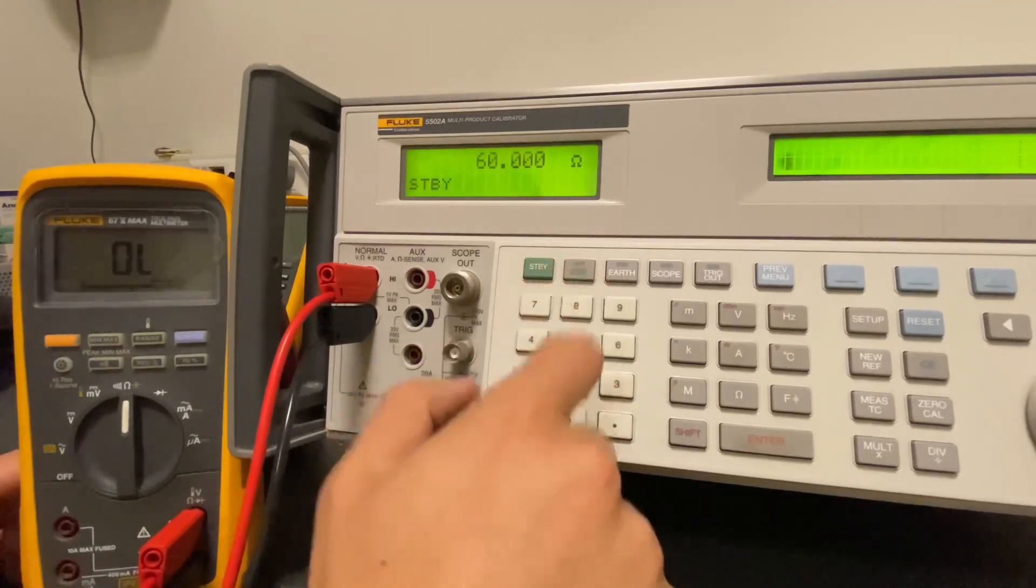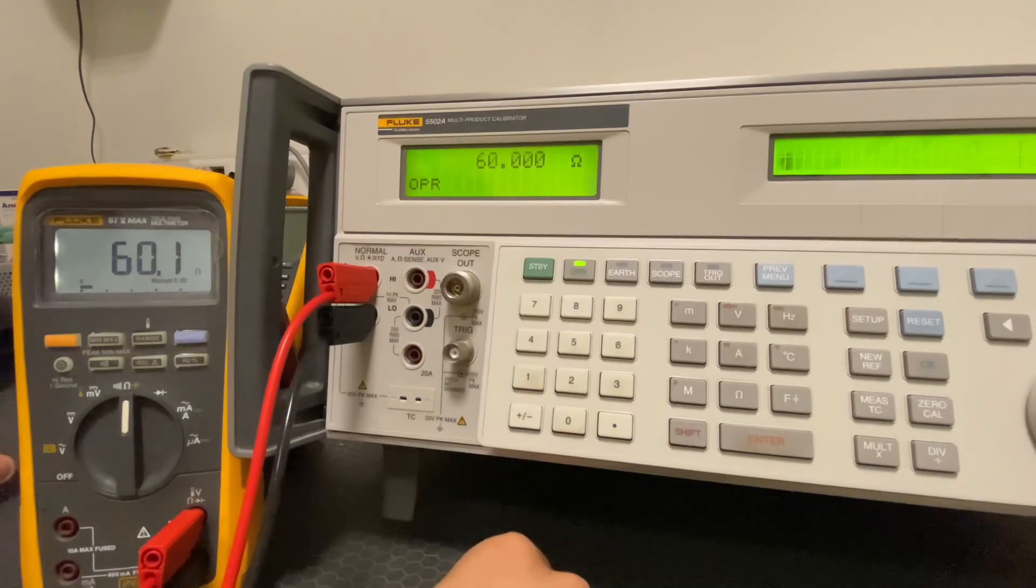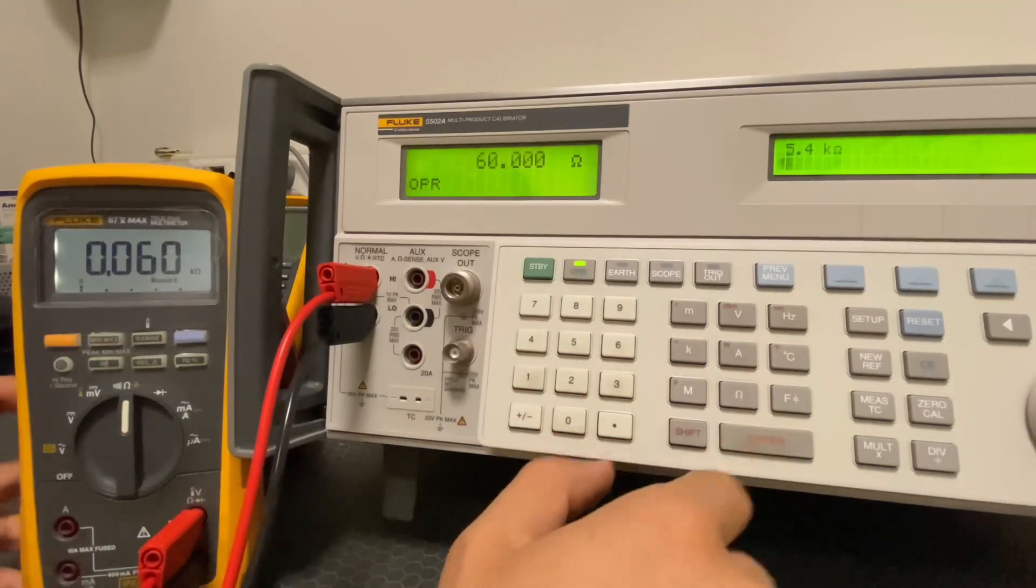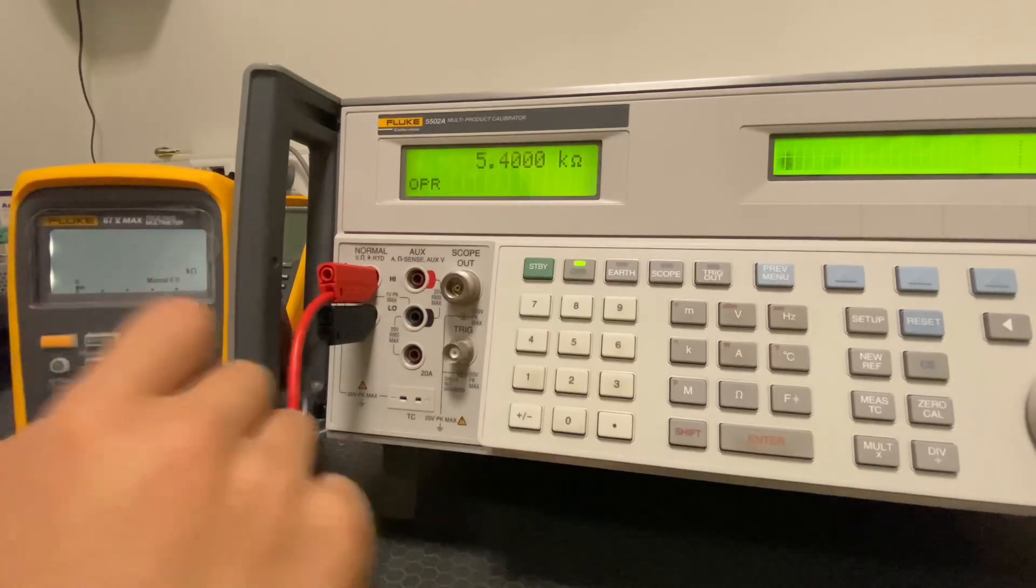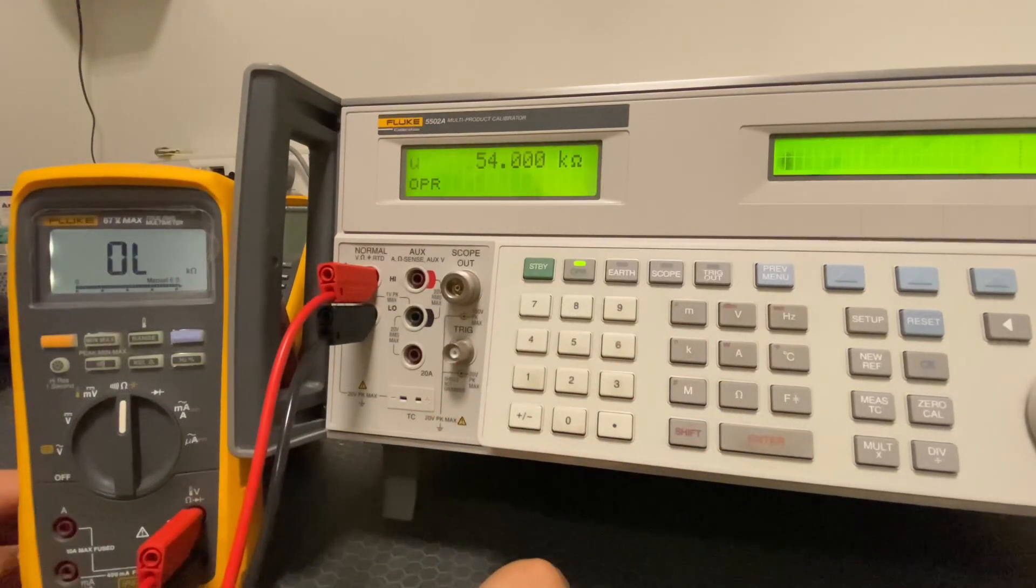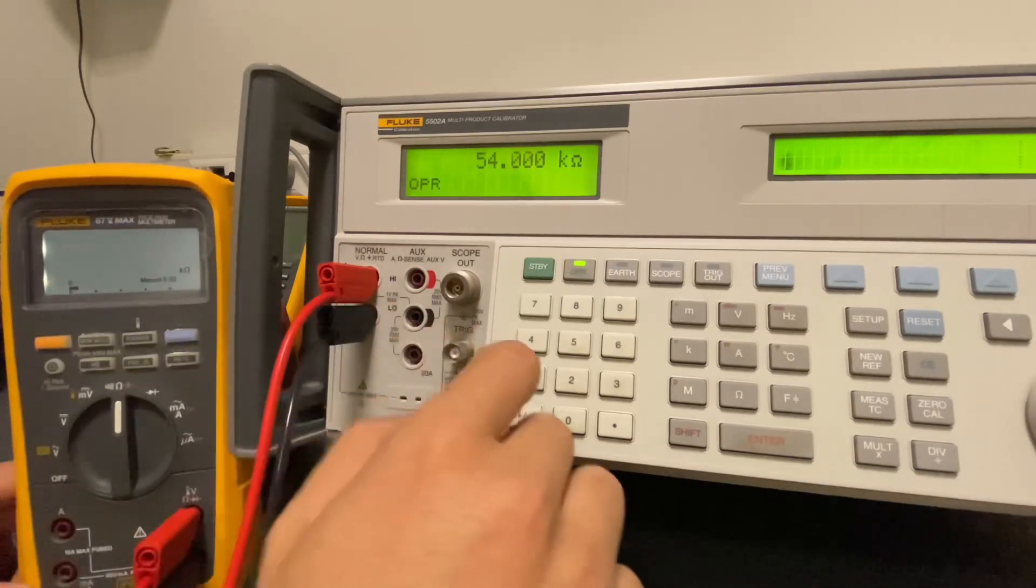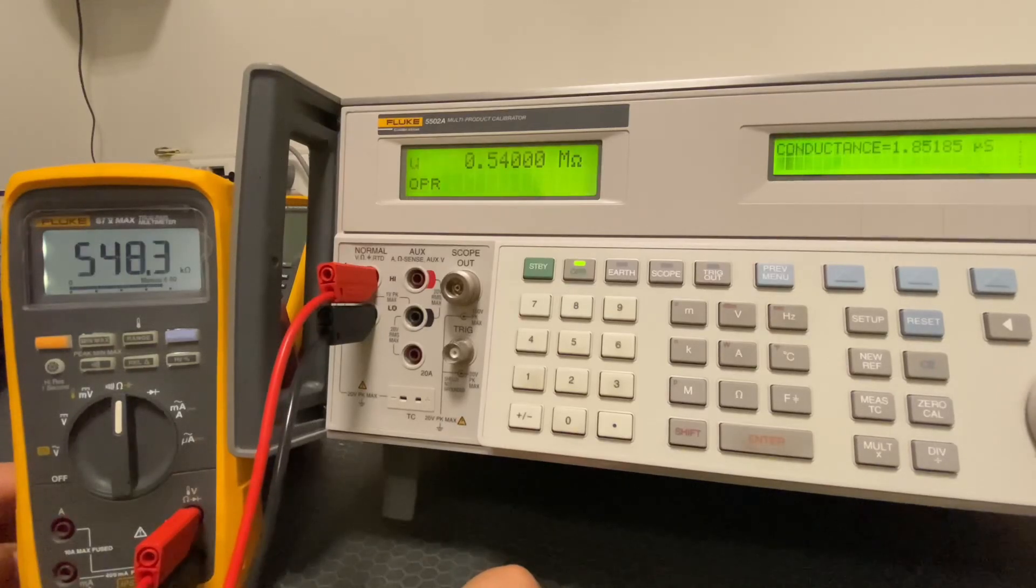Now we will do resistance measurements. We will check 60 ohms, 5.4 kilo ohms, 54 kilo ohms, 540 kilo ohms, 5.4 mega ohms, and 54 mega ohms. Let's start by checking on the Fluke multimeter then move on to the Unit. As expected, the Fluke values are smooth and accurate.